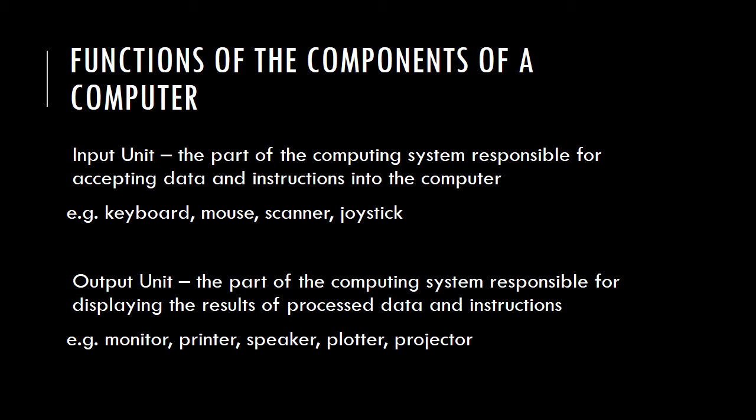The output unit is the part of the computing system responsible for displaying the results of the processed data and instructions. So we put in data and instructions, and the output unit shows or displays the result of that processing. Classic examples of output devices are your monitor — or screen — a printer, a speaker, a plotter, and even a projector.